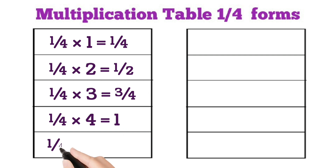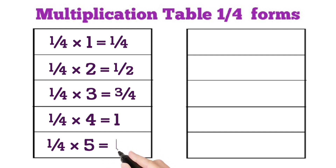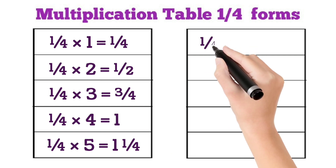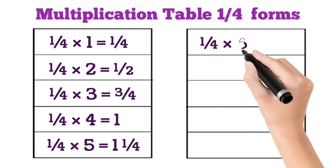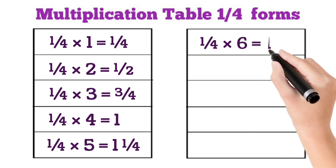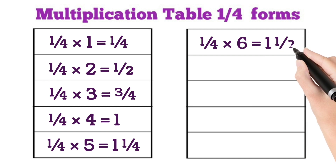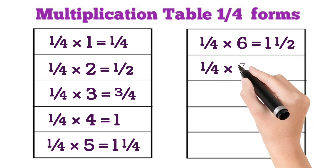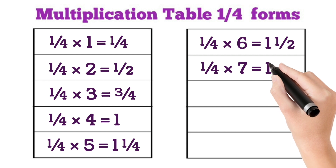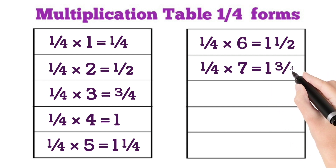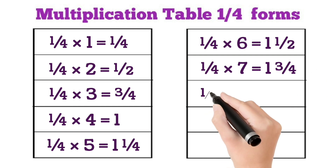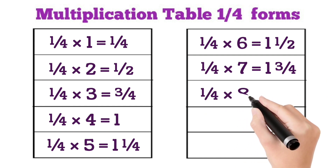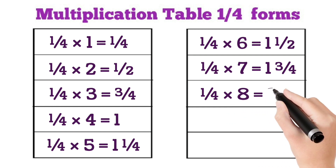1 by 4 multiplied by 5 is equal to 1 and 1 by 4. 1 by 4 multiplied by 6 is equal to 1 and 1 by 2. 1 by 4 multiplied by 7 is equal to 1 and 3 by 4. 1 by 4 multiplied by 8 is equal to 2.